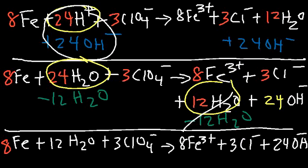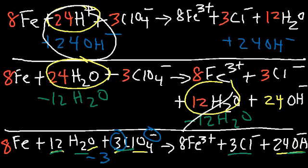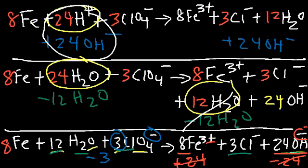This is the final balanced reaction under basic conditions. We have 8 iron atoms on both sides; 3×4 = 12 oxygen atoms in perchlorate, plus 12 in water, and 24 oxygen atoms in the 24 hydroxide ions; 3 chlorine atoms on both sides; and 12×2 = 24 hydrogen atoms. The net charge on the left is 3×(-1) = -3. On the right, 8×(+3) = +24, which cancels with -24 from the 24 hydroxide ions, leaving -3 from the 3 chloride ions. The net charge is -3 on both sides — the reaction is balanced.